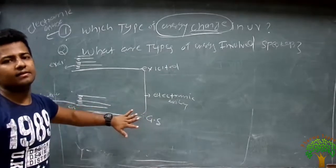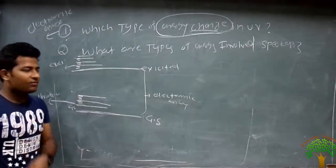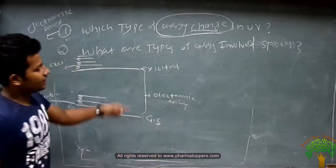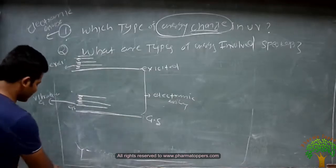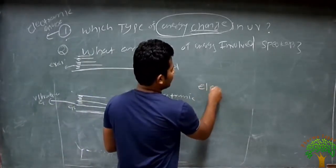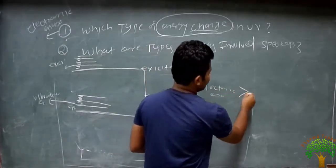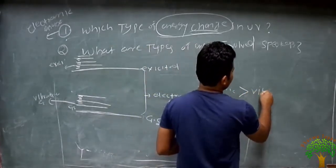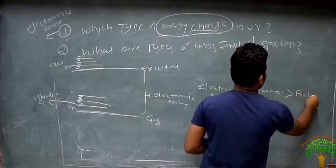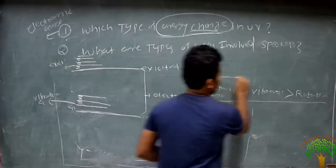This is the simplest way to explain the principle of UV spectroscopy, and the relation of electronic energy with rotational and vibrational energy. The energy of electronic energy is greater than vibrational, and vibrational is greater than rotational. This relation is also important.